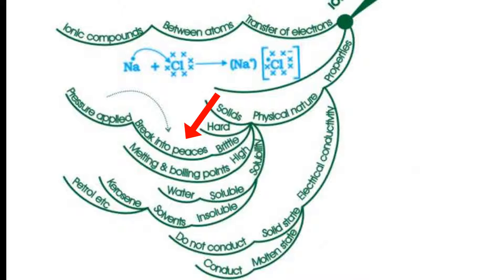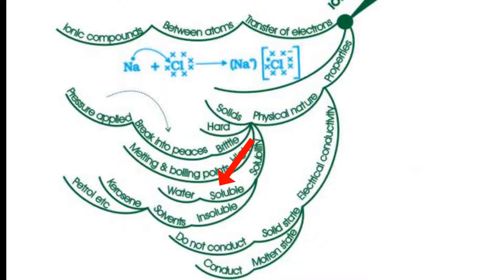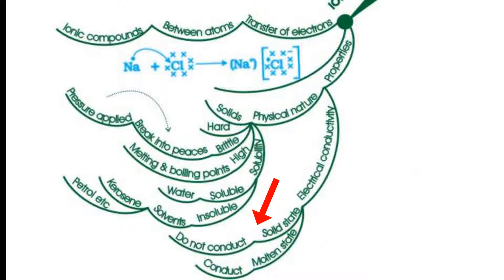broke into pieces when pressure is applied. Ionic compounds have high melting and boiling points. Solubility: ionic compounds are soluble in water and insoluble in solvents such as kerosene, petrol, etc. Electrical conductivity: ionic compounds in solid state do not